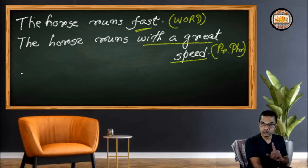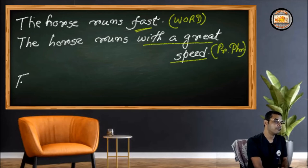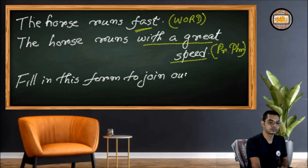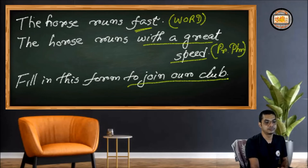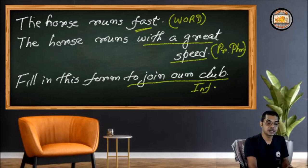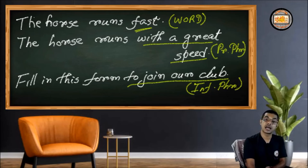The third example covers the infinitive phrase. Consider: 'Fill in this form to join our club.' Here, 'to join our club' is speaking of reason or purpose. So this infinitive phrase is used as an adverb — that's how an infinitive phrase can be used as an adverbial.